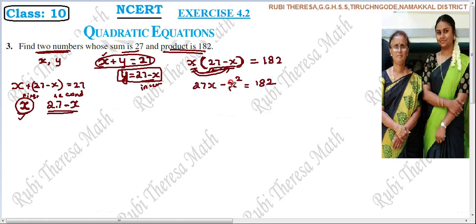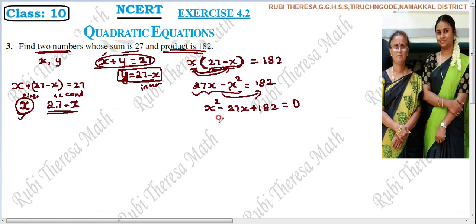We have minus X squared. The first term should be positive, so shift both terms to the other side. Minus X squared becomes plus X squared, 27X becomes minus 27X, and 182 becomes plus 182 equals 0. So we get X squared minus 27X plus 182 equals 0. Now we apply the factorization method — splitting the middle term.